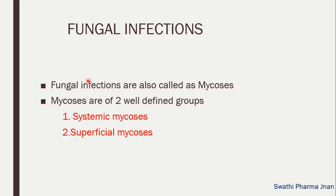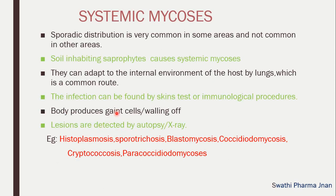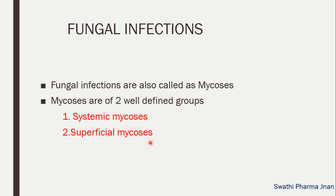What are fungal infections? Fungal infections are also called as mycosis, and this mycosis or fungal infections are classified into two types. One is systemic mycosis and the second one is superficial mycosis. Superficial mycosis will affect only the superficial part like the epidermal layer, dermal layer, cutaneous part of the skin, or subcutaneous part of the skin.